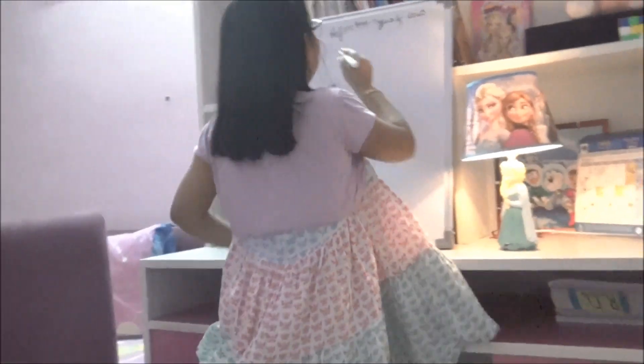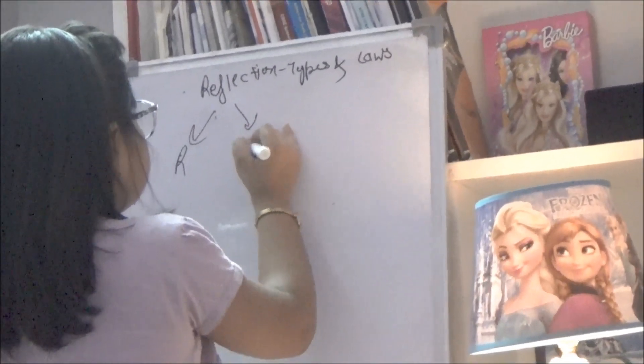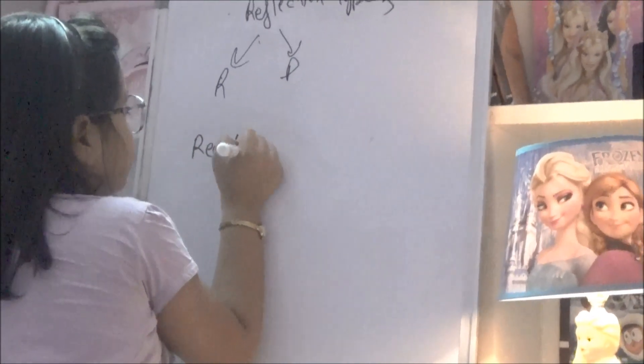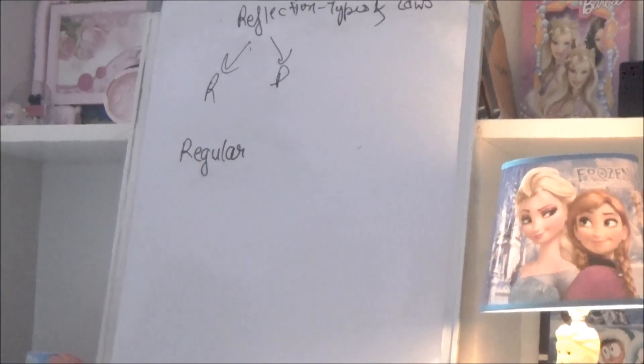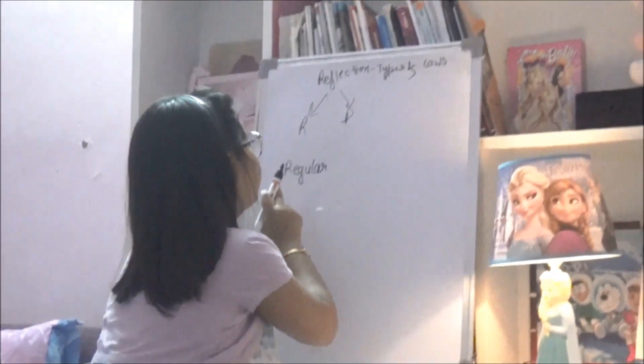Reflection is of two types: regular and diffused. So first let's talk about regular reflection. Objects with shiny or polished surfaces like looking mirrors, still water, or highly polished metals reflect more light in the same direction. So it is called regular reflection.